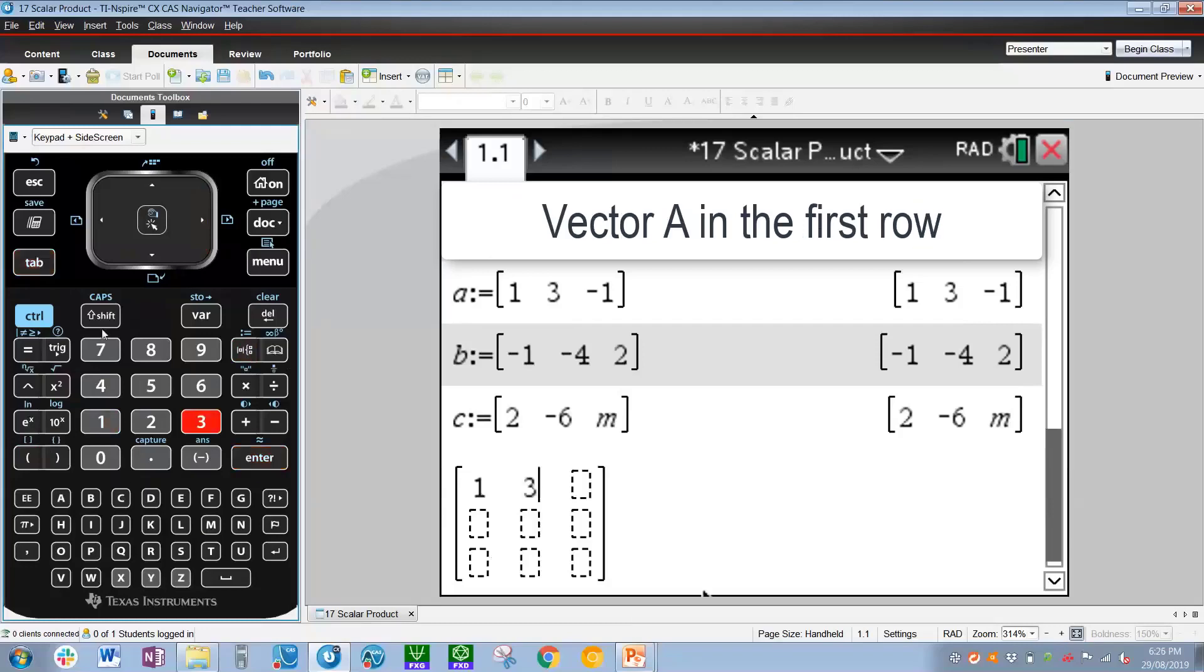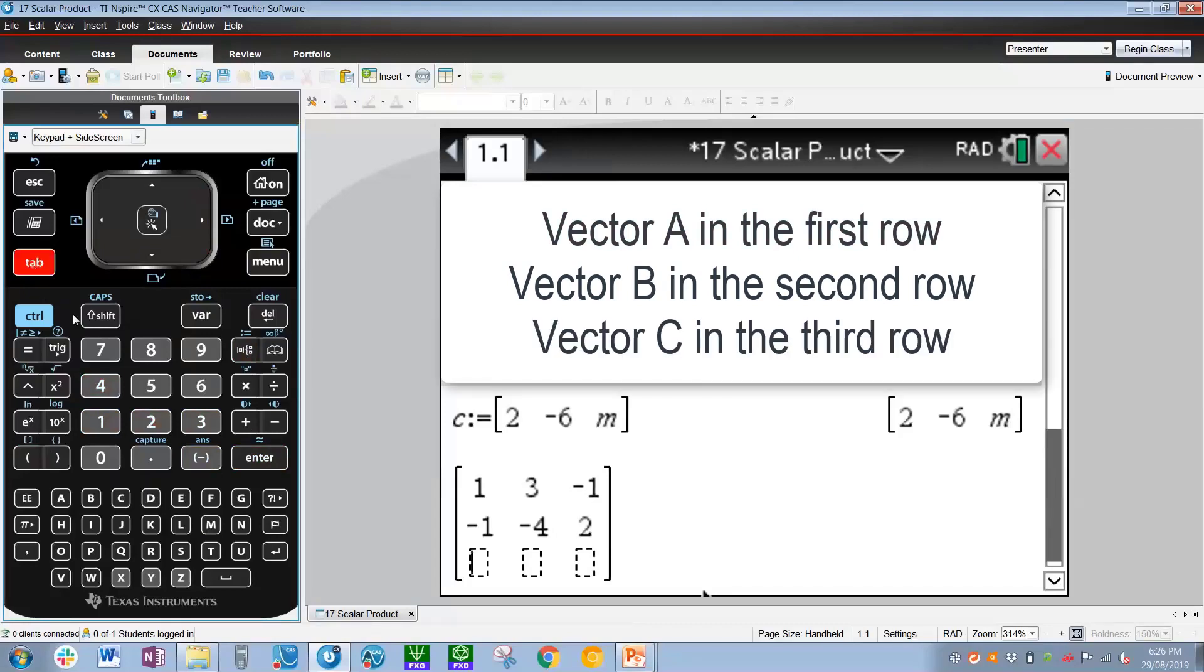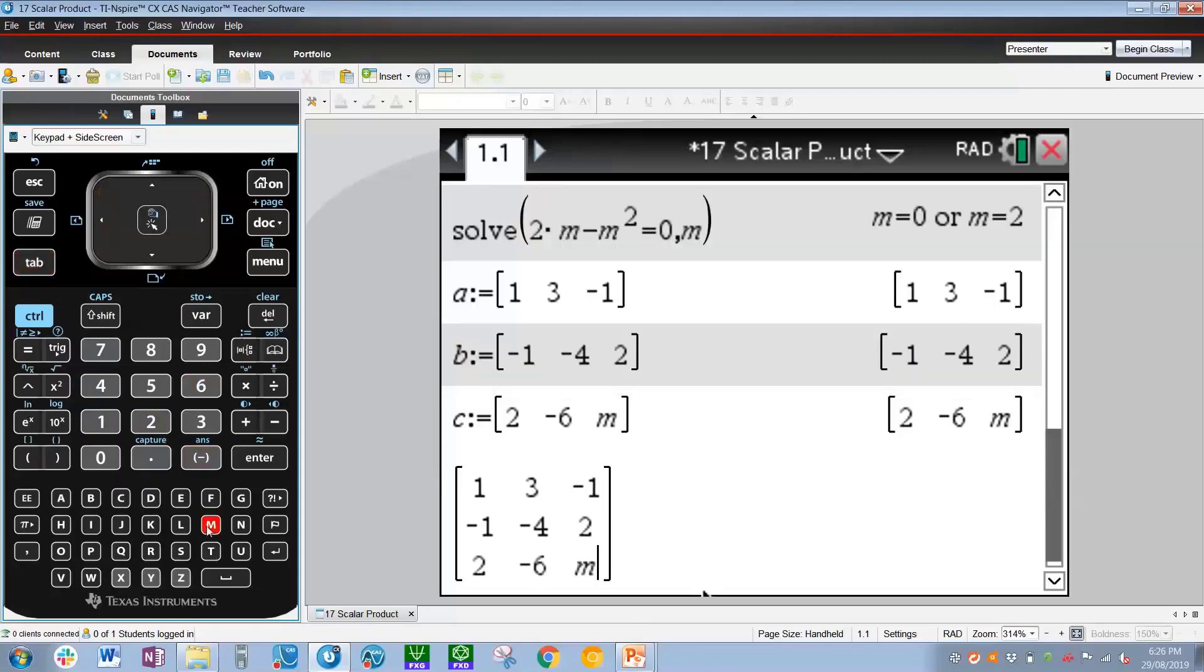So one, tab, three, tab, -1. And then press tab again, -1, tab, -4, tab 2. And finally, the last vector, 2, tab, -6, tab, and finally tab m. Enter. So we've now made up our determinant full of the coefficients or the components.